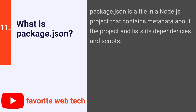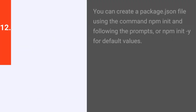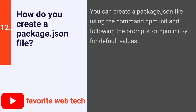What is package.json? Package.json is a file in a Node.js project that contains metadata about the project and lists its dependencies and scripts. How do you create a package.json file? You can create a package.json file using the command npm init and following the prompts, or npm init -y for default values.